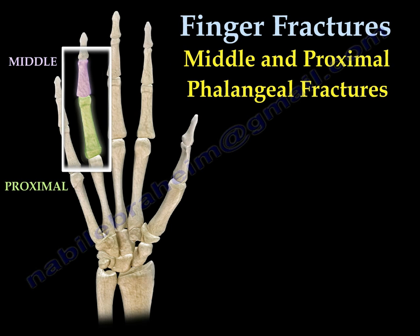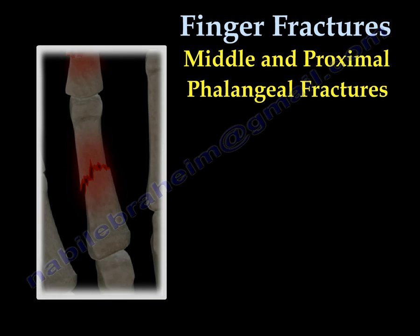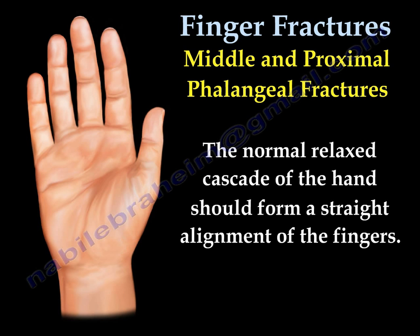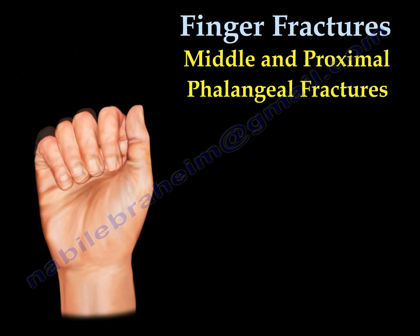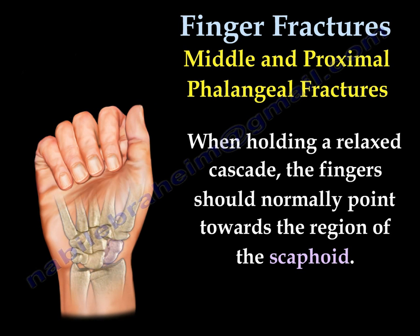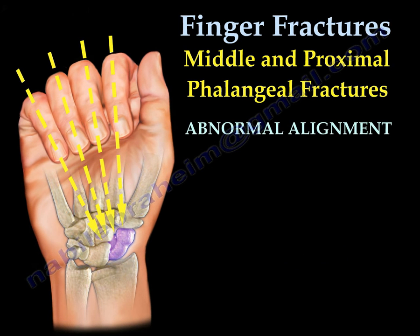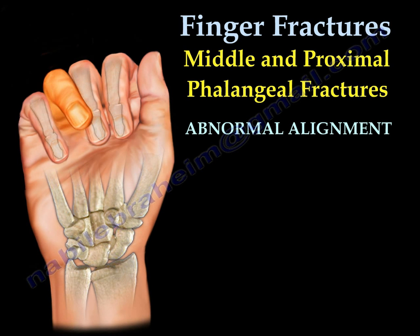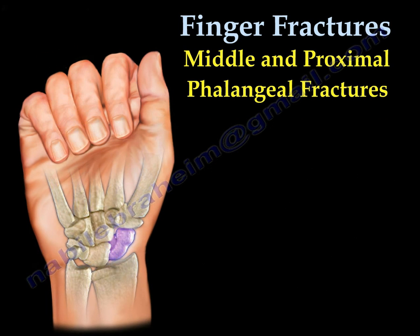Middle and proximal phalangeal fractures. The normal relaxed cascade of the hand should form a straight alignment of the fingers, and the fingers should normally point towards the region of the scaphoid. Abnormal alignment will show rotation of the finger, causing the affected finger to deviate from its normal rotational direction.